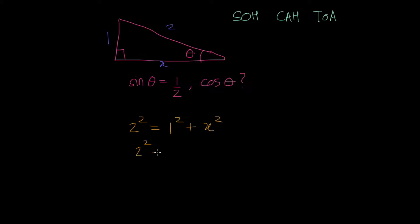2 squared minus 1 squared equals x squared. So that's 4 minus 1 equals x squared. 3 equals x squared. So taking the square root of both sides, my x is equal to, sorry, square root of 3. Yeah, taking the square root of both sides, x is equal to the square root of 3.